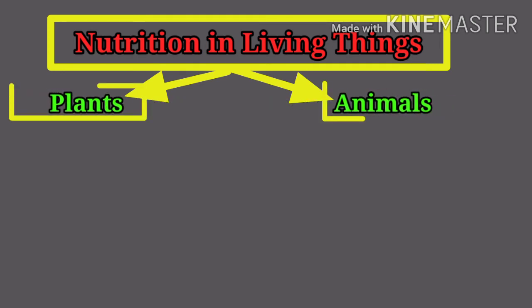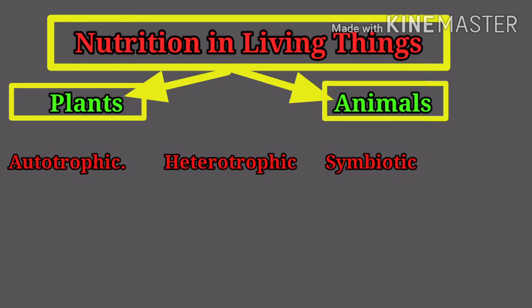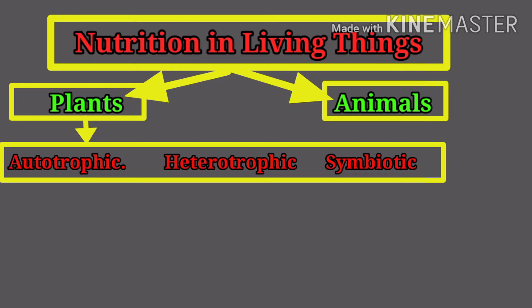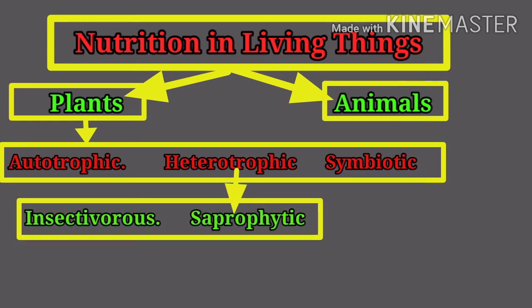There are three modes of nutrition seen in plants. In heterotrophic nutrition, plants depend on others to feed. Third is symbiotic nutrition, where two or more different types of organisms live together to fulfill their nutritional needs — like protection and support — in a give-and-take relationship. Heterotrophic nutrition is further divided into insectivorous plants, which feed on insects, and saprophytic plants, which feed on dead and decaying bodies of other organisms.